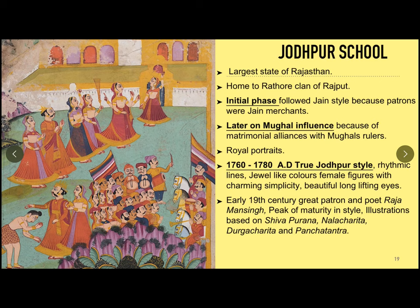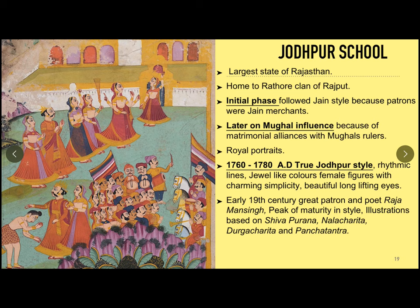Jodhpur, the largest state of Rajasthan, was home to the Rathaur clan of Rajput. Initially, Jain style of painting was followed because the patrons were Jain merchants. Later on, Mughal influence was prominent because of a few matrimonial alliances with the Mughal rulers. In this phase, royal portraits were painted in abundance. A true Jodhpur style came up between 1760 to 1780,